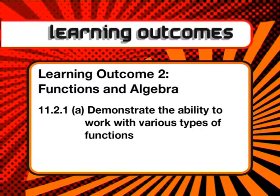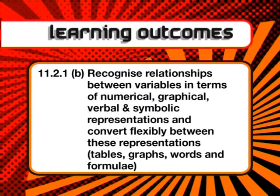Learning Outcome 2: Functions and Graphs, 11.2.1a. Demonstrate the ability to work with various types of functions. b. Recognize relationships between the variables in terms of numerical, graphical, verbal, and symbolic representations, and convert flexibly between these representations — tables, graphs, words, and formula.